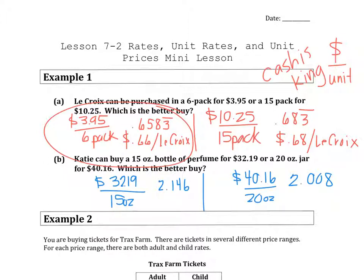Because we are talking about money, I prefer it to be to the hundreds place. So the first one is going to be $2.15 per ounce, and the second one is going to be $2.01 per ounce. So the better buy would be your 20-ounce, I said jar, but obviously bottle of perfume.